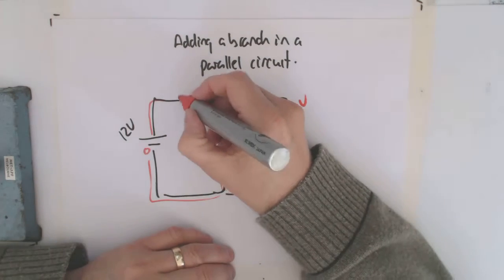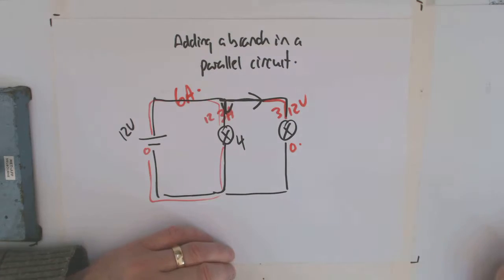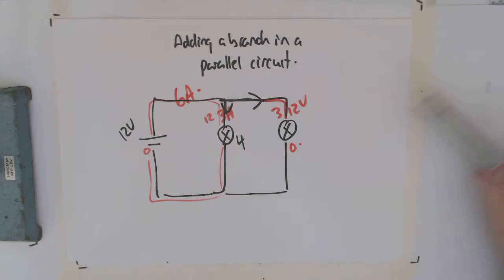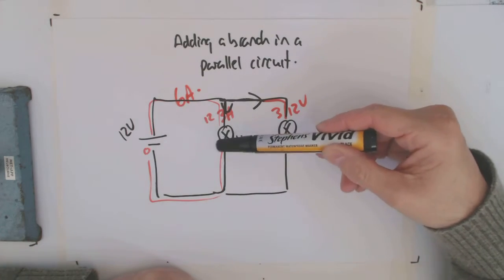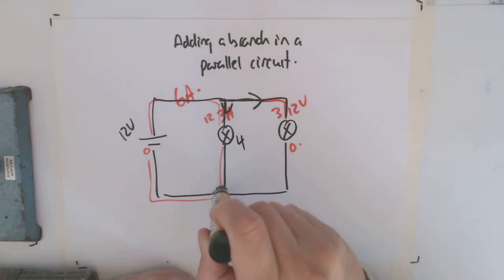So that means the original current that came out has gone up to 6 amps. So it doesn't matter how many loops we add in parallel, we're still never going to decrease the current through a loop because we're not changing the voltage across that lamp.